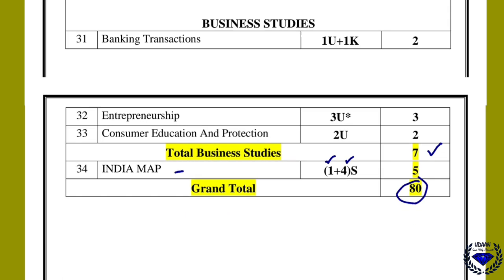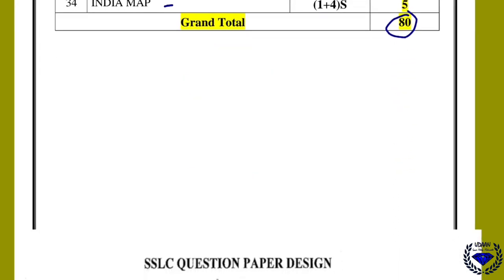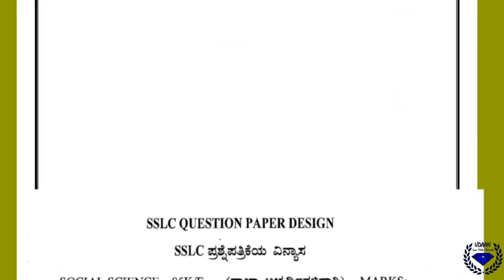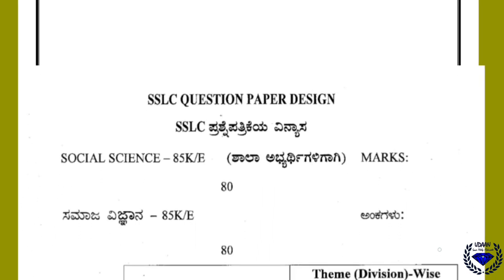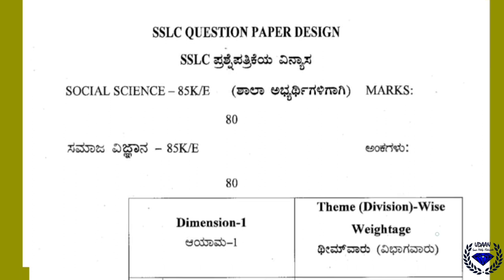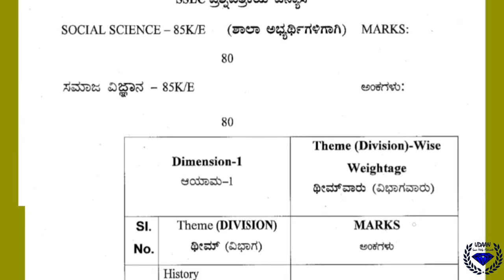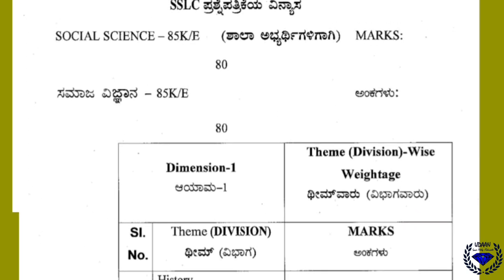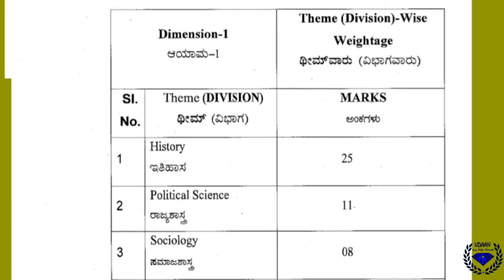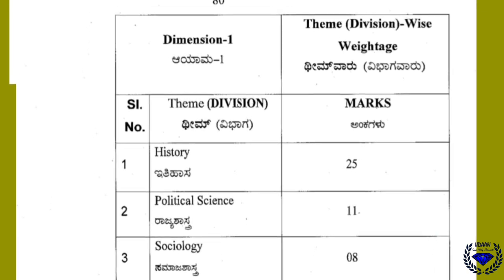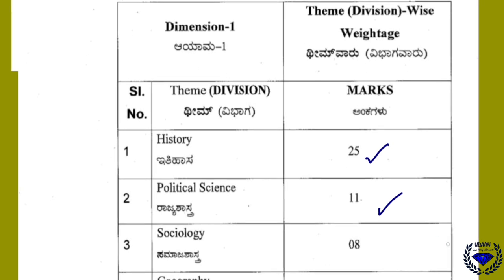The grand total of the paper is 80 marks. If you understand this, kindly like, share with all your friends, and subscribe. The subject code is 85E — 'E' means English medium. From this year it is theme-based, whereas before it was chapter-based. The same pattern has been followed in designing the model question paper of 2023, which is provided by KSEAB.